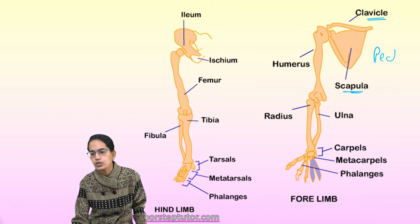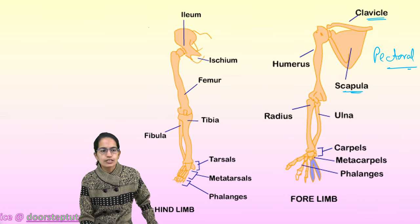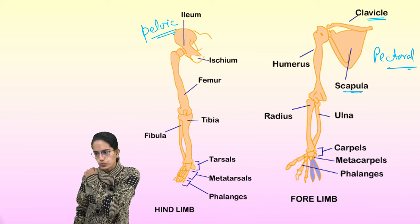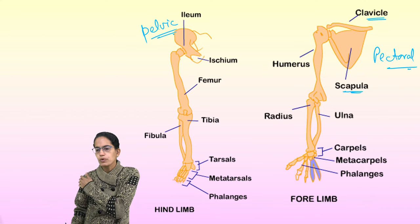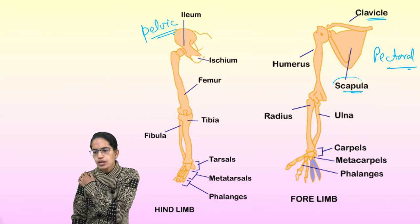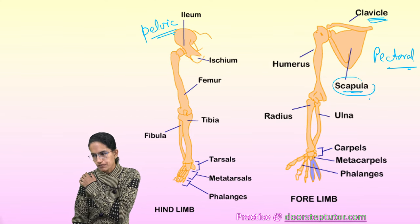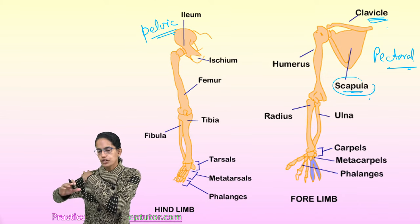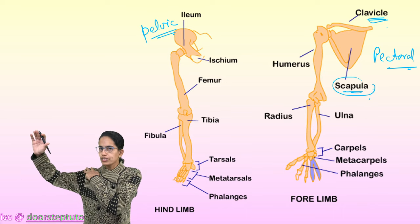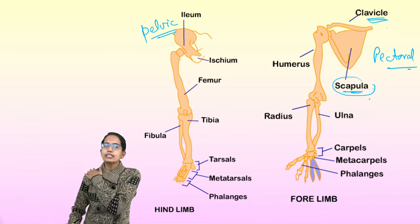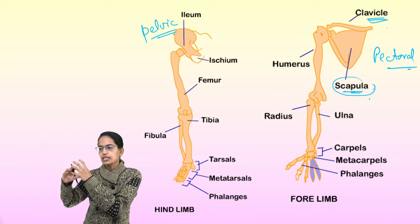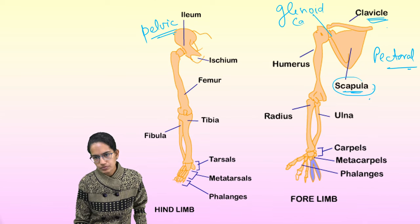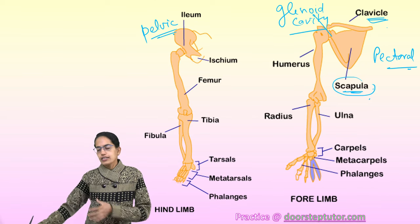The two bones of the shoulder girdle, also known as the pectoral girdle, are the clavicle and the scapula. The pectoral girdle has a triangular bone known as the scapula, and on top of the scapula at the front is the clavicle. It has a socket where the ball and socket joint fits, allowing movement of the hand. This depression is known as the glenoid cavity.